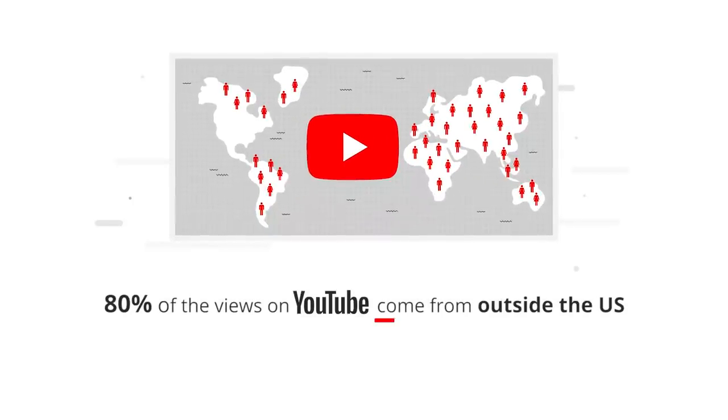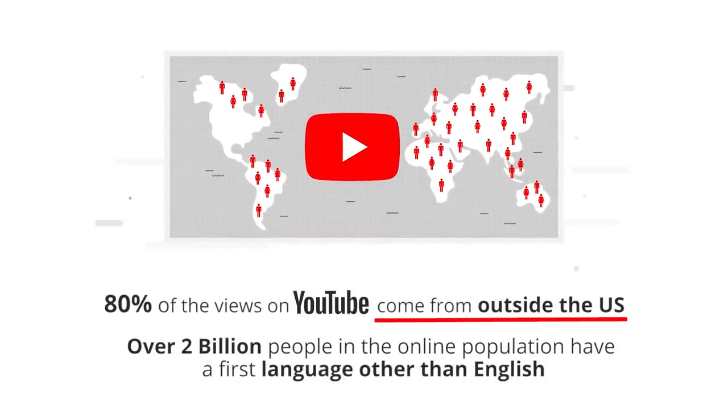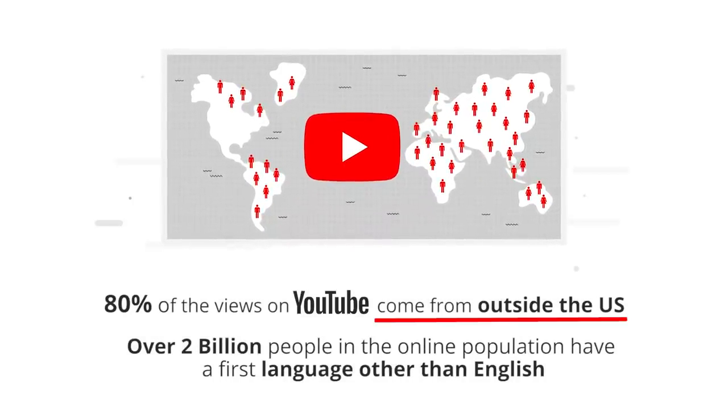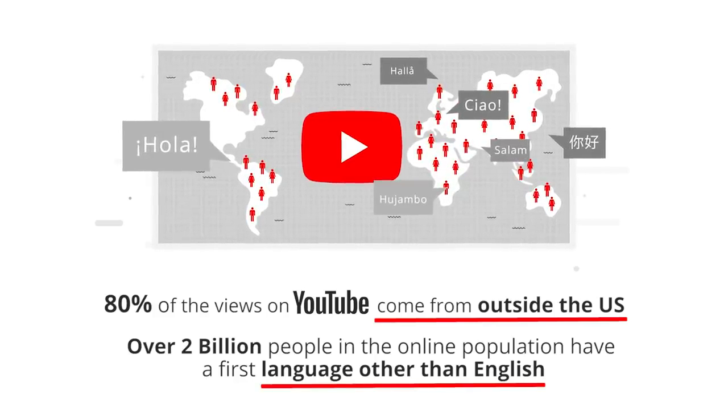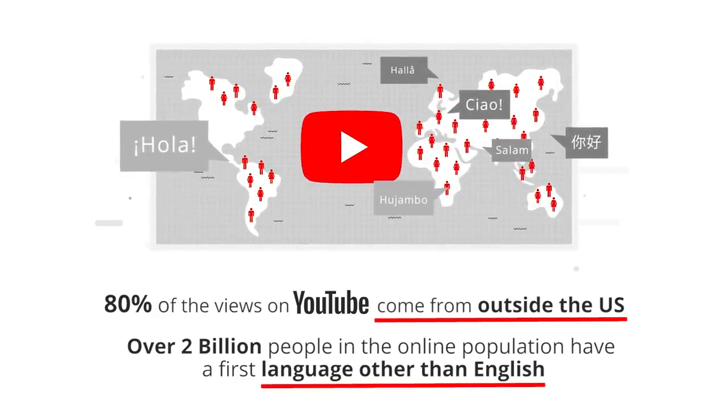Moving on to the next and arguably largest group: people learning your language. Captions in English are easier to follow than just spoken English and they can help those watching to pick up the language faster. 80% of the views on YouTube come from outside the US. Over 2 billion of the online population have a first language other than English — you do not want to be missing out on those potential subscribers.